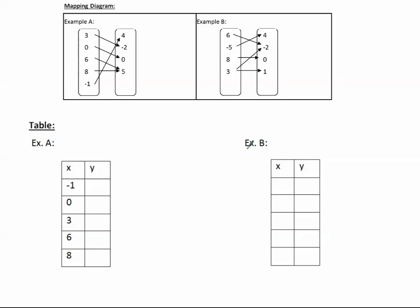Let's look at how to convert the mapping diagram to a table and tell when it's a function or not. Taking the x values and ordering them from least to greatest for example A: negative one goes with four, zero goes with zero, three goes with negative two, six goes with five, and eight goes with five. Notice how each of these x values are different — they're all different x values. This one is a function, just as we saw in the mapping diagram.